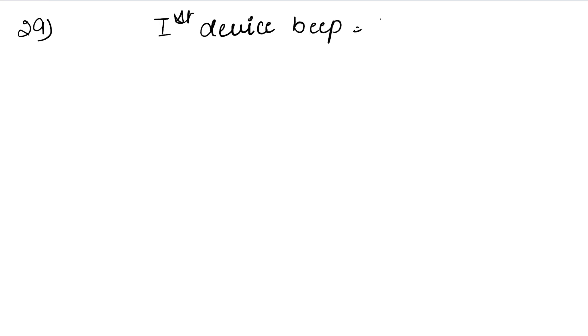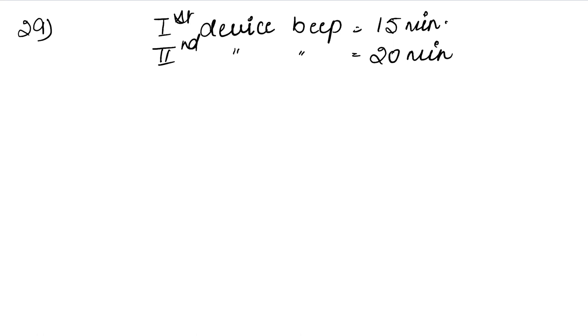Question number 29 — we know the first device beeps after every 15 minutes and the second device beeps after every 20 minutes. We need to find after how many minutes they will beep together again. We need a time value that is divisible by both numbers.